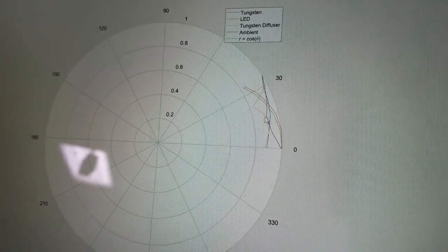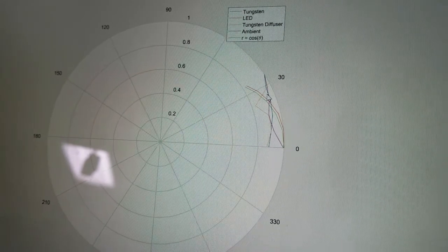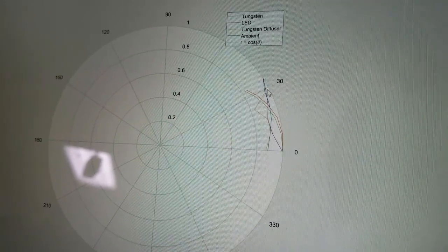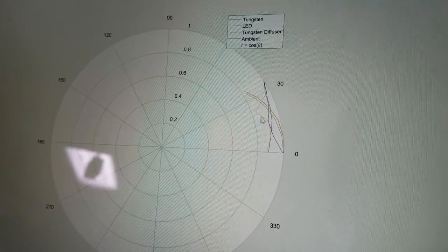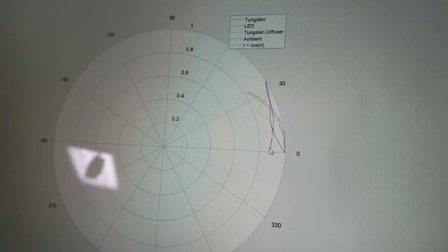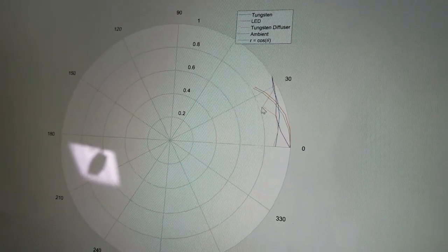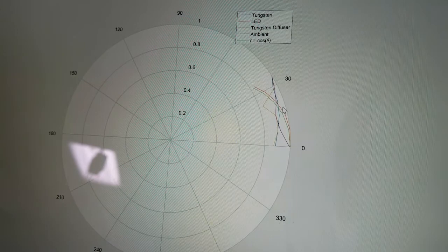And then this orange line with this jagged peak is our tungsten with diffuser. We thought that this should be Lambertian, and in fact it should be according to theory because it's a matte source, but because the diffuser didn't cover the entire area of the filament, it gave us bad data, and that's what that source of error is from.